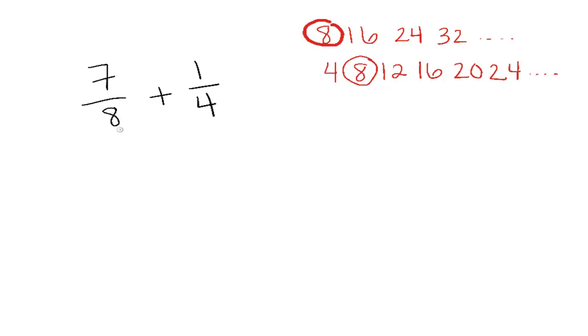So this one already is an 8, so we can leave it alone. This one is not an 8. In order to make it an 8, we need to multiply it by 2. Now whenever you multiply the bottom of a fraction by something, you have to multiply the top of the fraction by the exact same thing in order to keep the fraction equivalent to what it already was.